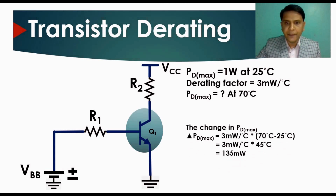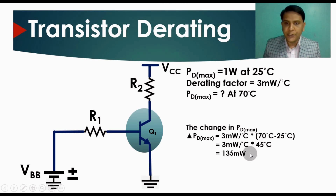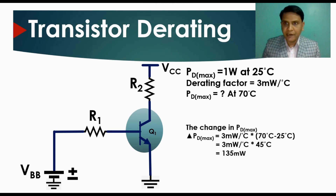The change in power dissipation is given by: ΔPD_max = derating factor × ΔT. The temperature change is 70°C − 25°C = 45°C. So the change in power dissipation is 3 mW/°C × 45°C = 135 milliwatts.